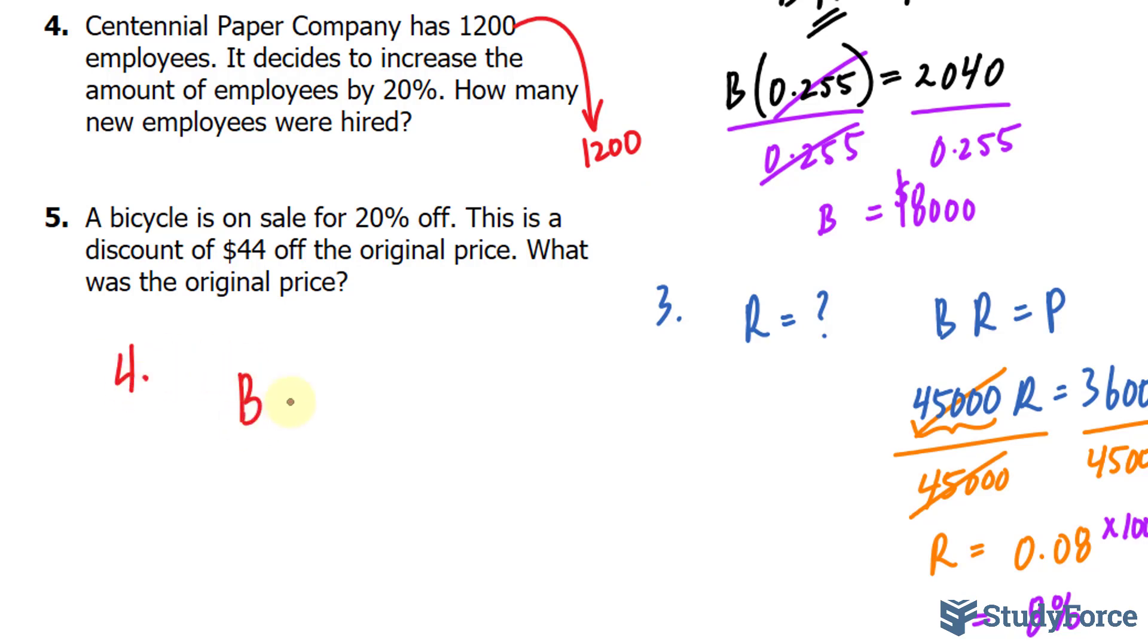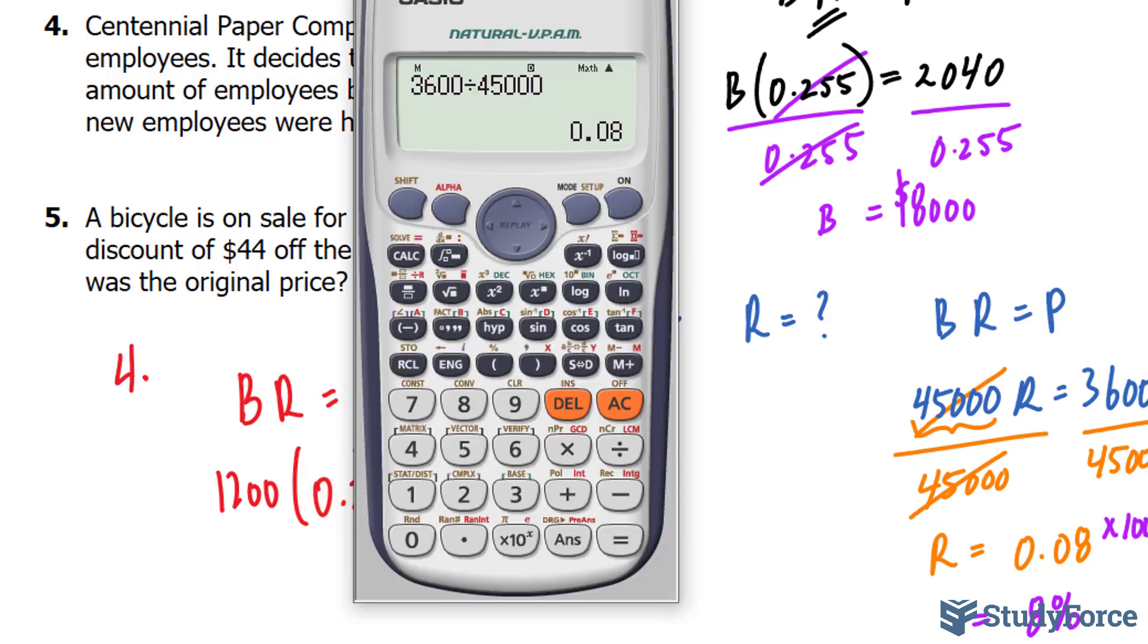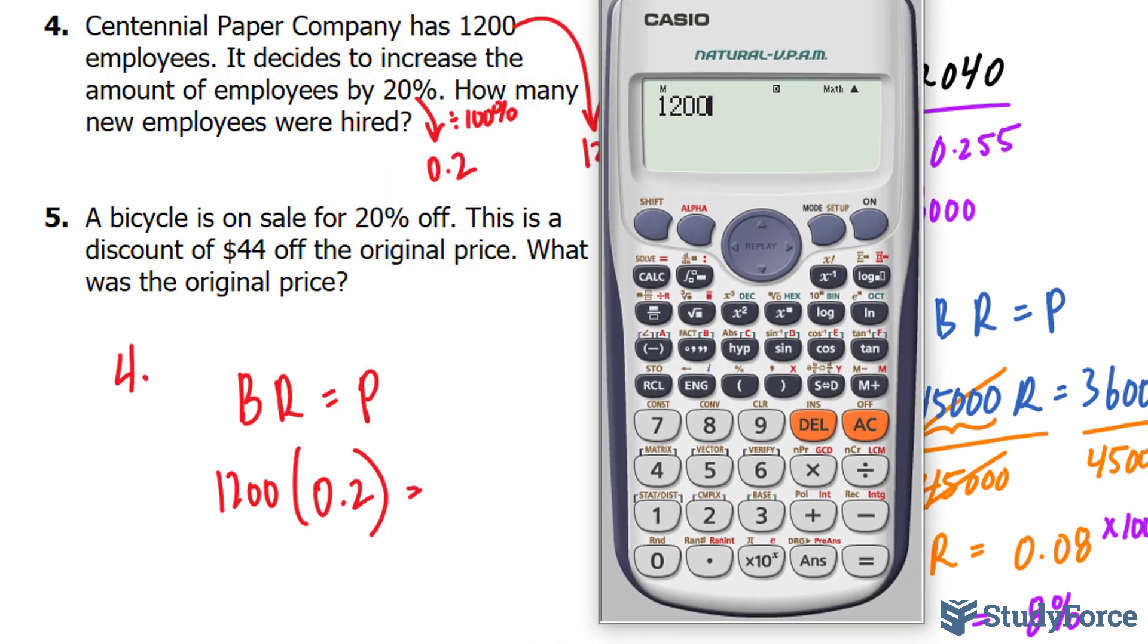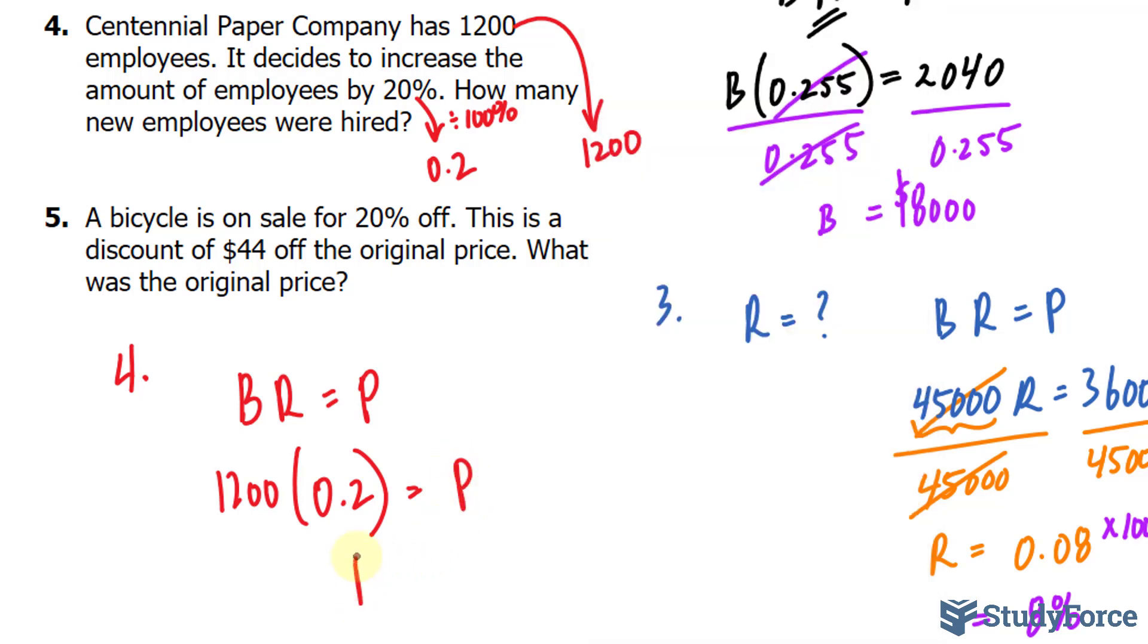So to find out the portion of 1,200 that is 20%, again, we use the formula BR is equal to P. Our base value is 1,200. Our rate is 20%, which needs to be made into a decimal by dividing by 100%. And that's 0.2. And if we multiply this out, we find the portion that represents the new employees. So multiplying these two factors, we end up with a P value that is 240. And specifically, in relation to this question, that is 240 new employees. Remember to always provide a therefore statement.